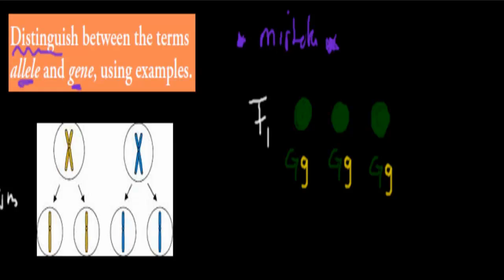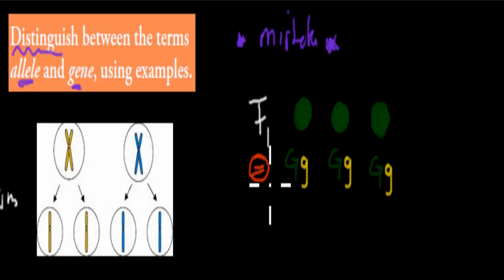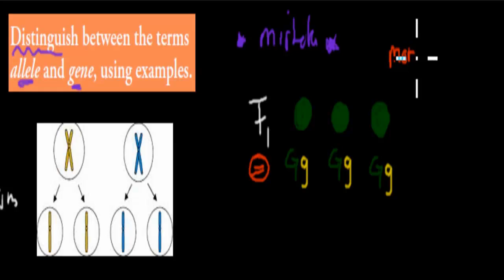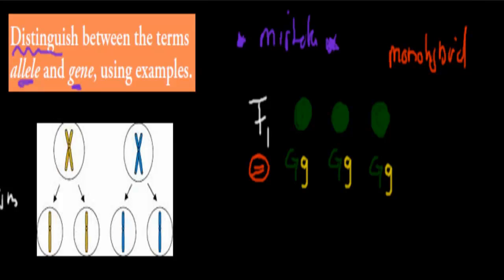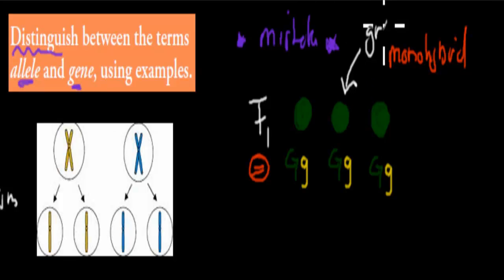We were talking about the F1 generation — this was when we bred the two different pure breeds in the F1 generation and had these monohybrids. I talked about phenotype and genotype: phenotype was the appearance, and I said these had the appearance of green, so their phenotype was green, and their genotype...